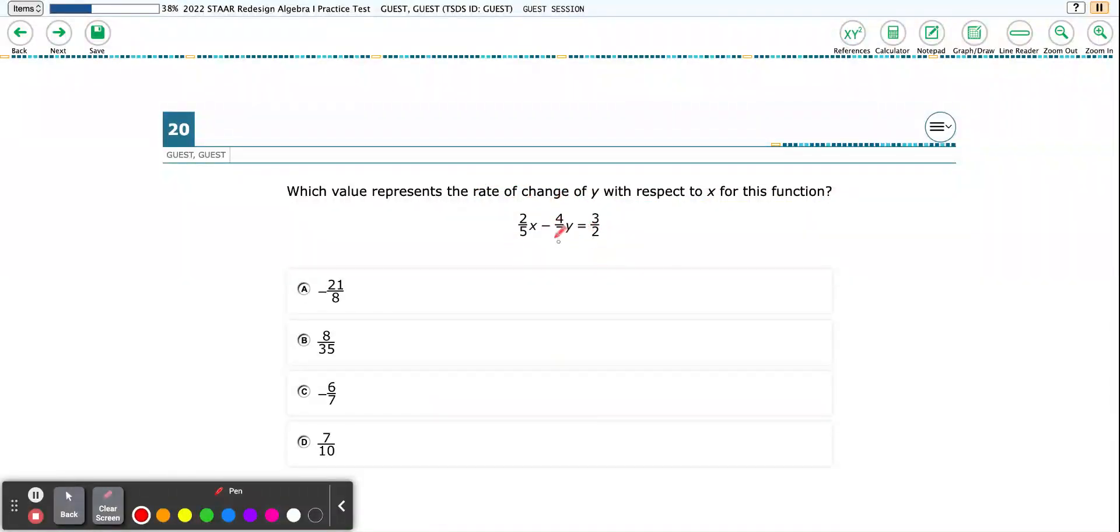Let me clear that out. So we have a function here, and we've got x and y on the same side of the equal sign. We know that we need slope intercept form, something in the form y equals mx plus b because m is our slope.